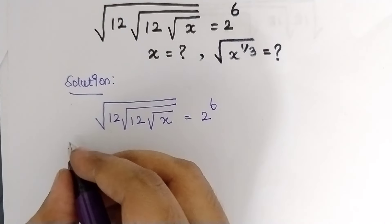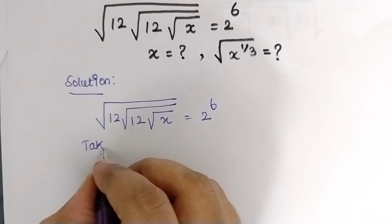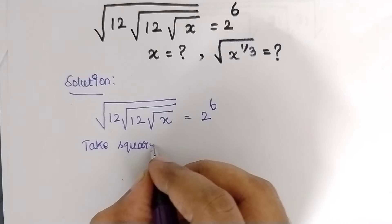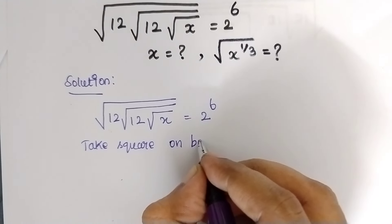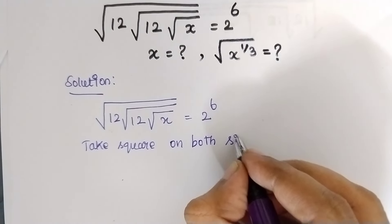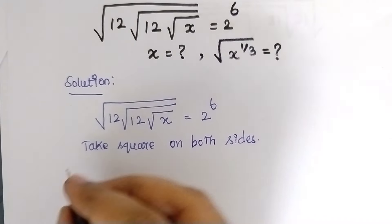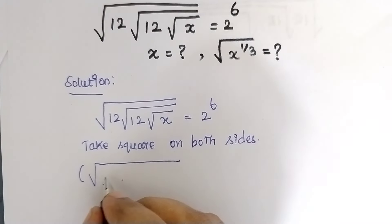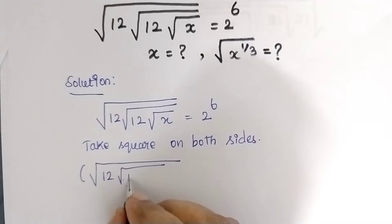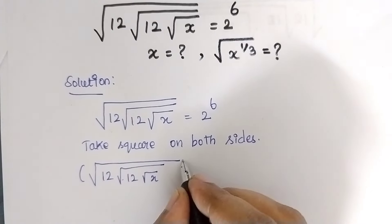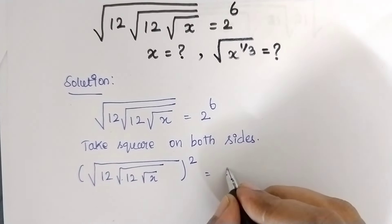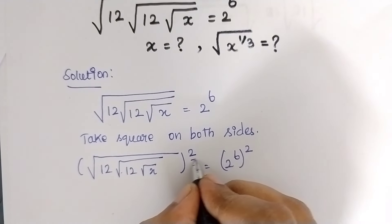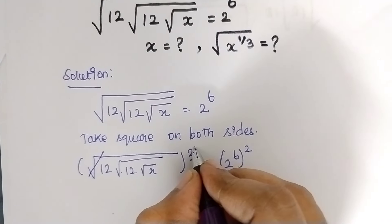The first step is we need to take the square on both sides. By taking the square, the root gets cancelled by the square. So by taking the square on both sides, this root gets cancelled.